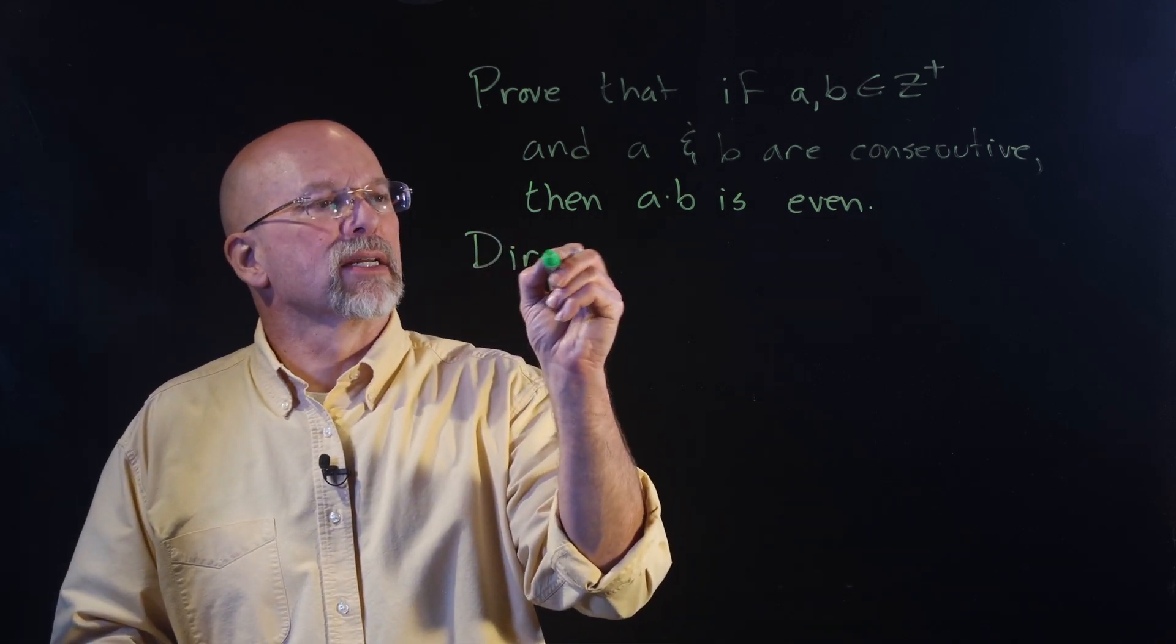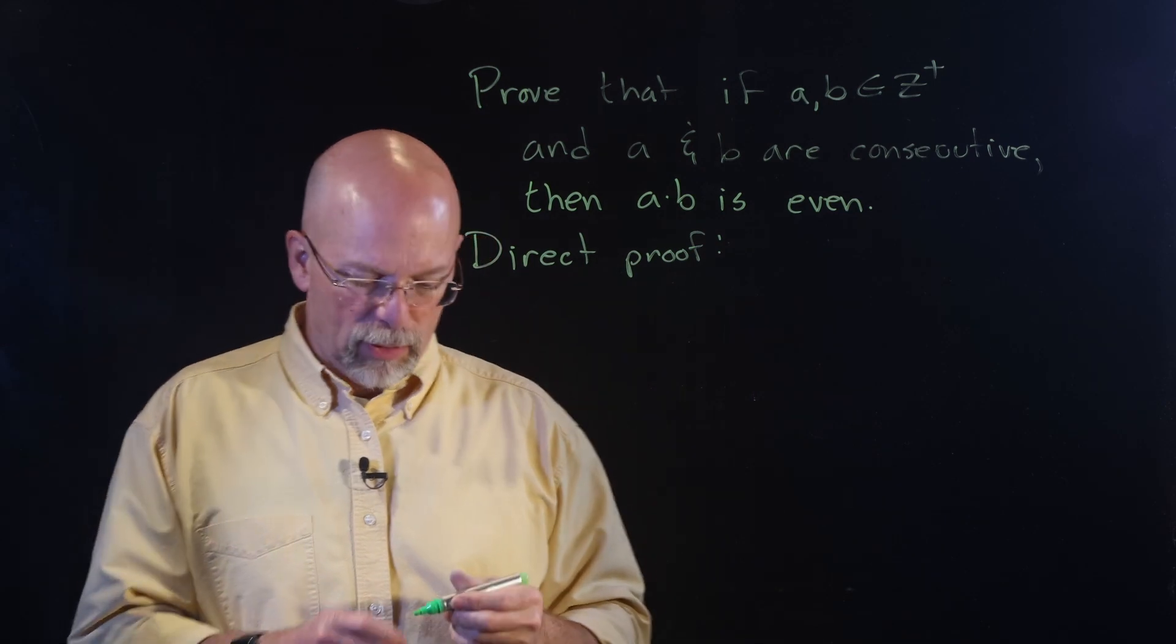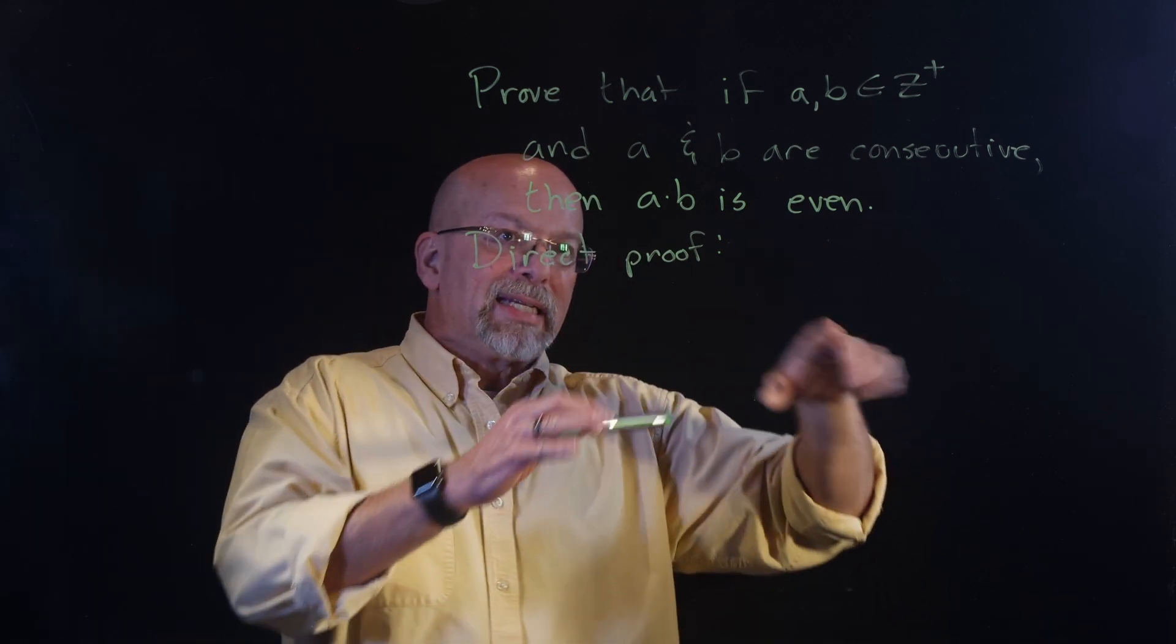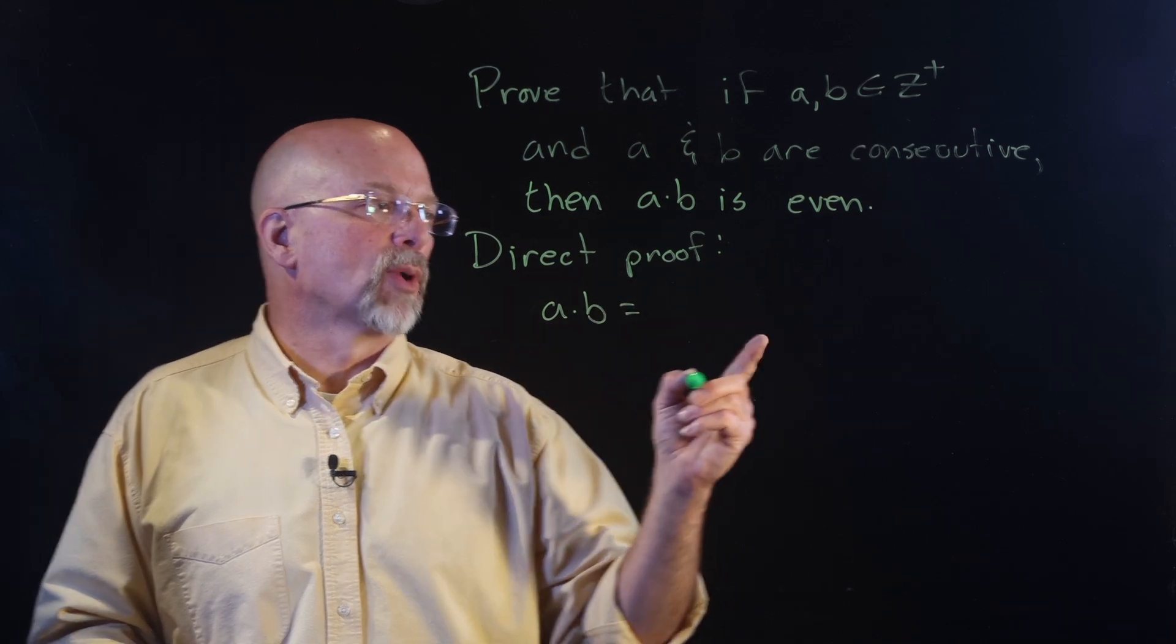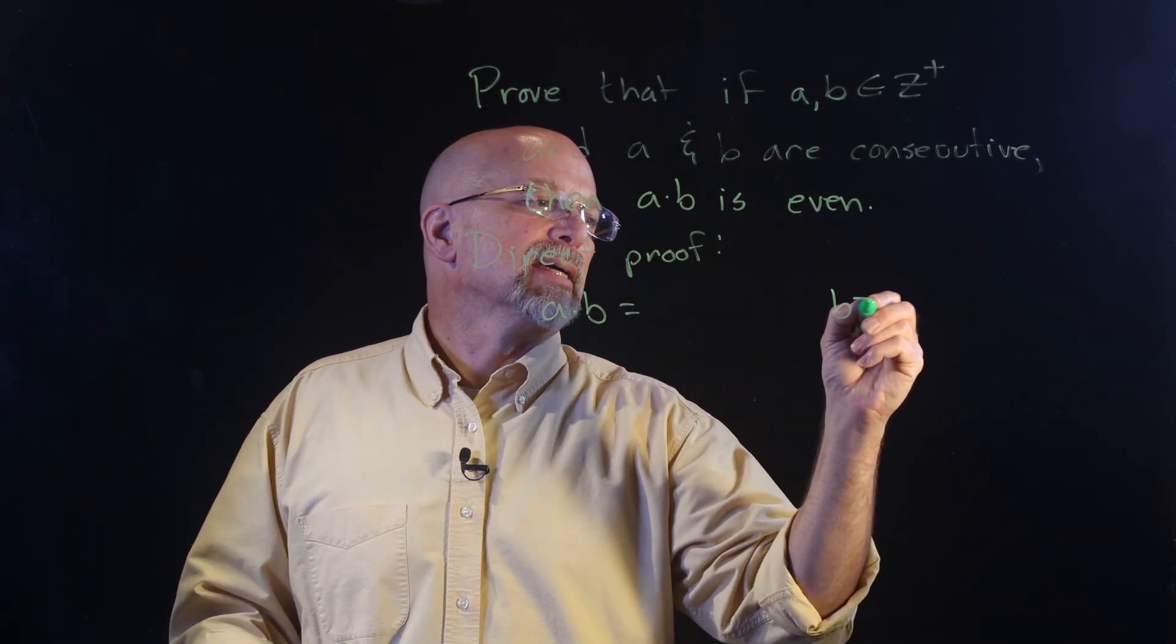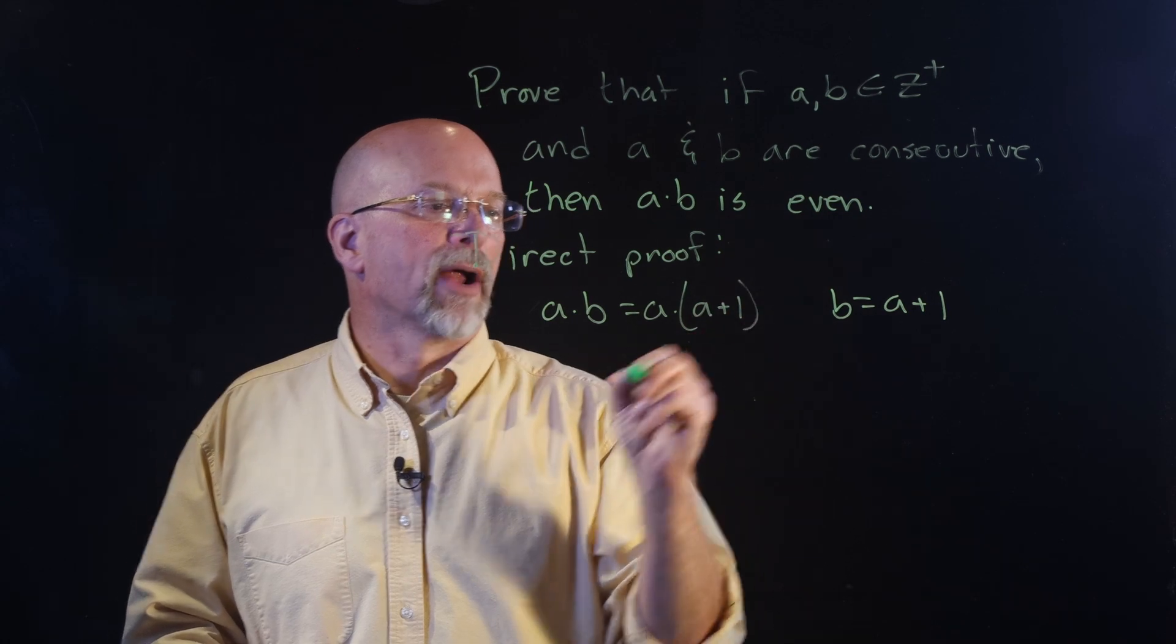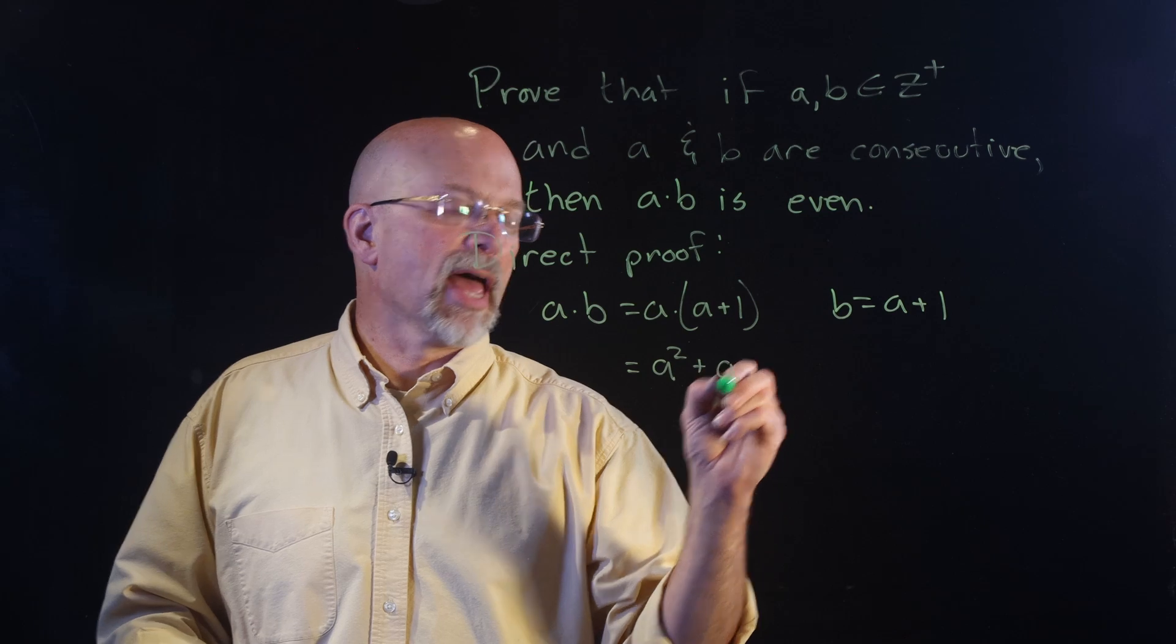Let's start out with a direct proof. How does our direct proof look? Well, remember, what the direct proof says is we start out with our premise, and then we work our way down to the eventual conclusion. So, a times b equals, well, I've already said that based on this, that b is equal to a plus one. So, a times b is a times a plus one, right? Now, if I multiply those together, I get a squared plus a.